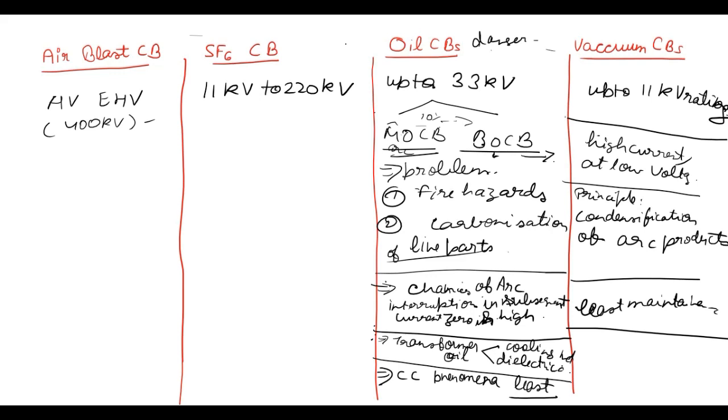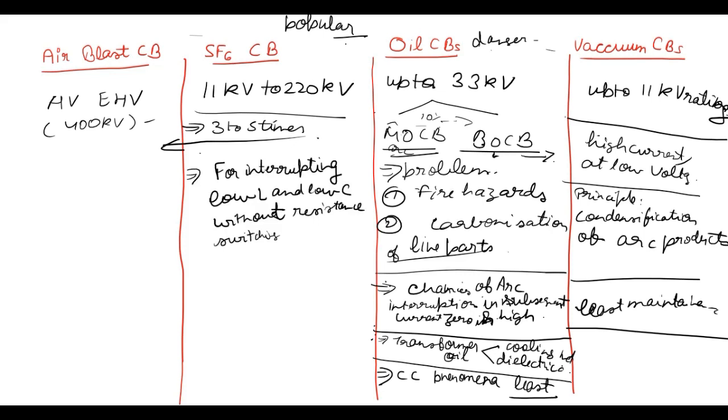Now next is SF6 circuit breaker. You know its range. It is very popular and so widely used. It is around 3 to 5 times better than air blast circuit breaker due to its electronegativity property. It is used for interrupting low inductance and low capacitance without resistance switching.